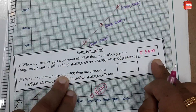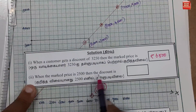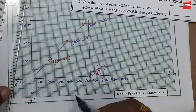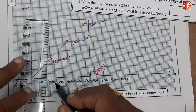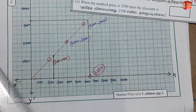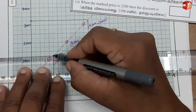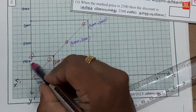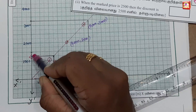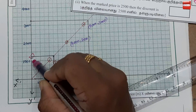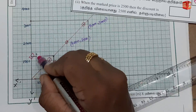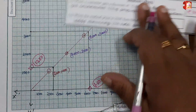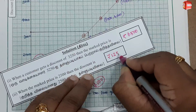Second option: the market price is ₹2,500, which is the x-axis value. Locate ₹2,500 on the x-axis — that is 2,000 plus 5 small divisions of 50, giving 2,500. Go up to the graph line and read the corresponding y-axis value. Here, between 1,000 and 2,000, 5 small divisions give 250, so the discount is ₹1,250. This is the answer.